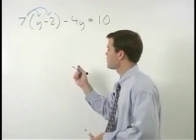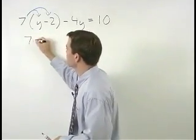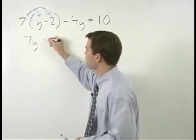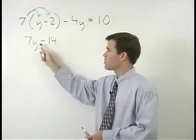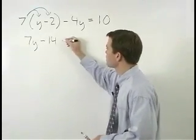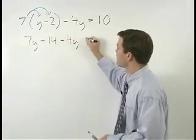7 times y is 7y, and 7 times negative 2 is negative 14. So we have 7y minus 14 minus 4y equals 10.